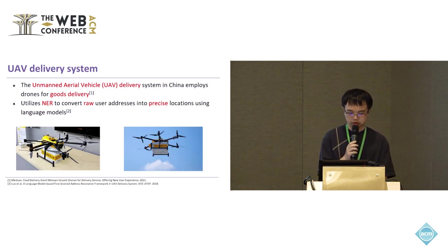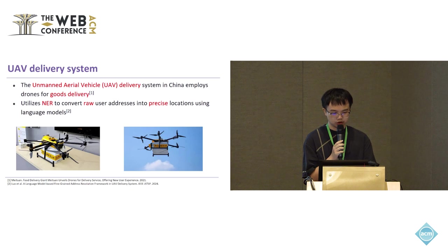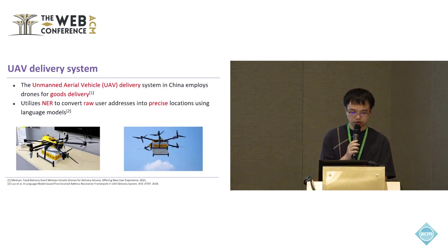This is where NER comes into play. When a user inputs their address, the language model uses NER to extract essential components such as street names, buildings, floors, communities, and so on. The extracted data is then converted into precise coordinates through dual coding techniques, allowing the UAV to pinpoint the exact delivery location.